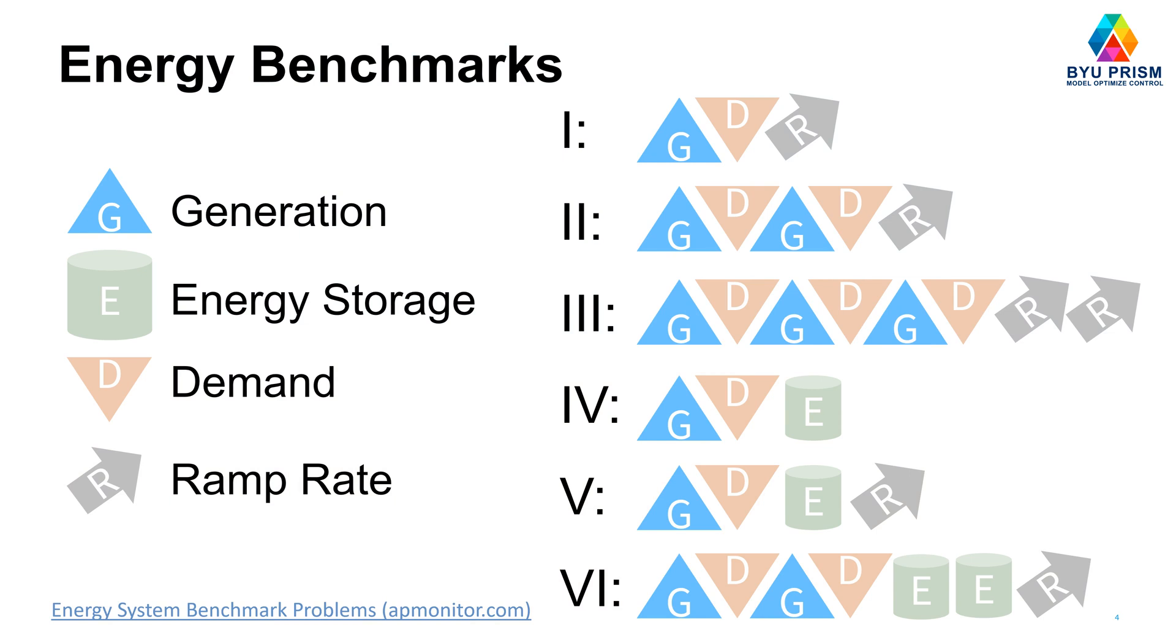So we've developed six grid energy benchmarks that include generation, energy storage, demand, and ramp rate. In particular, we have the first one that includes just one generation, one demand, so for example electricity, and then a ramp rate.